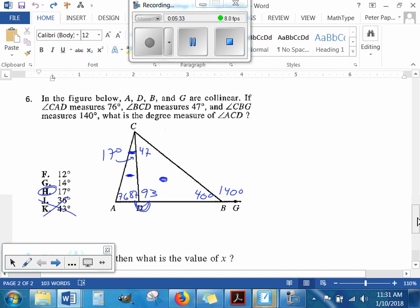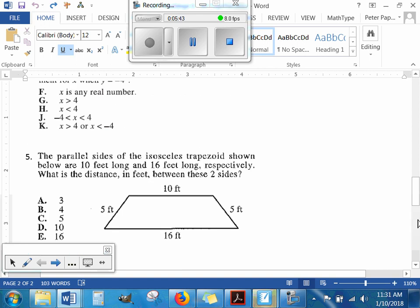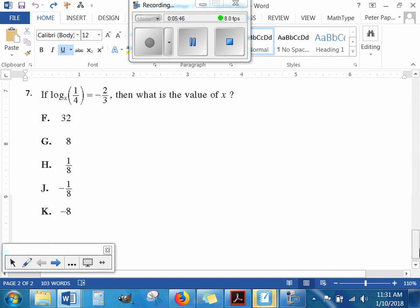Please select your answer for number seven. You can do guess and check if your calculator can handle logs with different bases. To solve algebraically, rewrite this in exponential form as x to the negative two-thirds equals one-fourth. Then raise each side to the negative three-halves to cancel the exponent. You'd have x equals one-fourth raised to the negative three-halves, which is eight. So x is 8, or answer G.